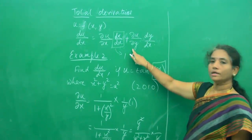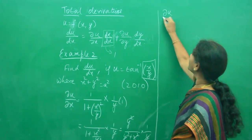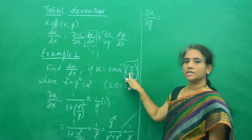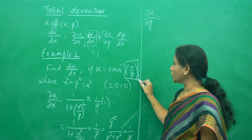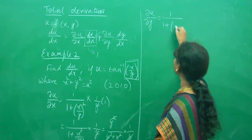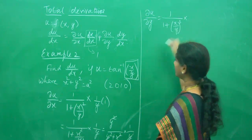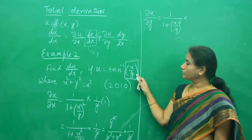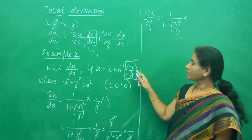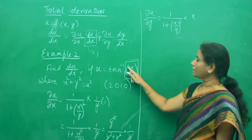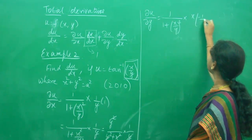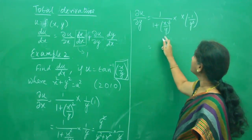Now I am going to do ∂u/∂y. I need to differentiate with respect to y. The derivative of tan inverse x is again by chain rule: 1 by 1 plus x square. Then write the derivative of the chain — we are differentiating with respect to y, so x is the constant. Write x first, and the derivative of 1 by y is minus 1 by y square.